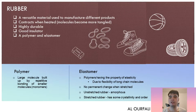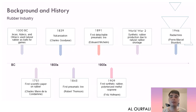Unstretched rubber is amorphous, while stretched rubber has some crystallinity and order. In 1000 BC, the Incas, Aztecs, and Olmecs used natural rubber as balls for games. In 1751, the first scientific paper on rubber was written by Charles Marie de la Condamine.